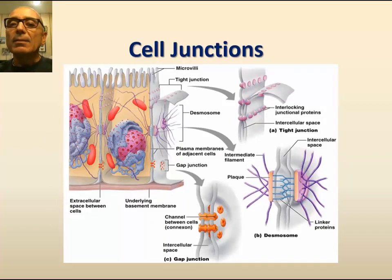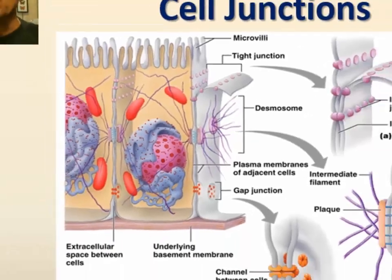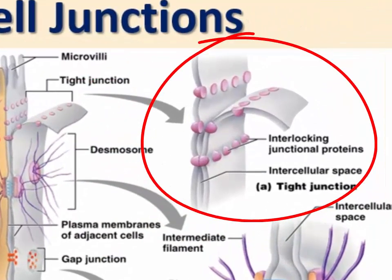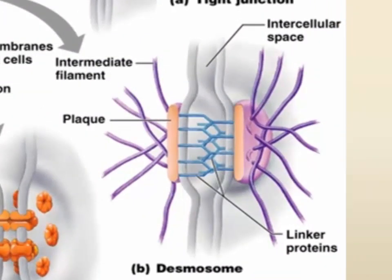The type of cell-to-cell junctions that cement cells together can be of three main types in animal cells. Looking again at these intestinal cells, we recognize tight junctions as the first type. Tight junctions seal adjacent cells together in such a manner that they limit the passage of molecules and ions through the space between these cells. Tight junctions also block the migration of embedded membrane proteins within the membrane. The second type are desmosomes, which are localized patches that hold two cells tightly together. They are common in the skin where they are needed to maintain the structural integrity of skin tissues.